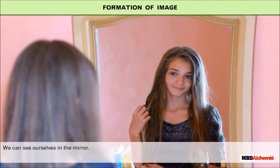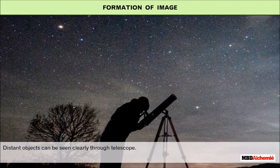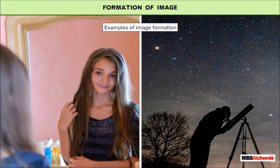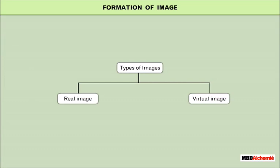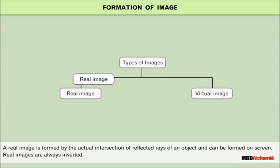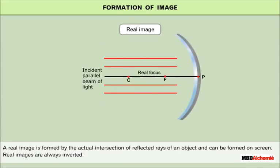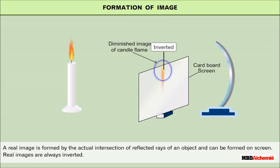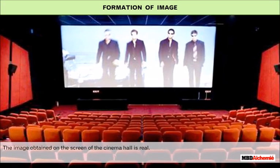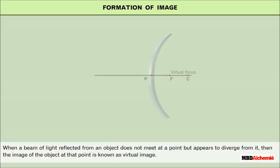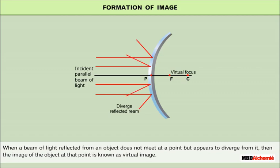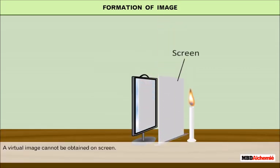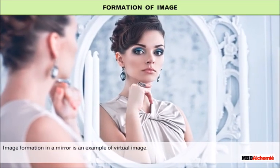Formation of Image. We can see ourselves in the mirror. Distant objects can be seen clearly through a telescope. All these are examples of image formation. Images are of two types: real image and virtual image. A real image is formed by the actual intersection of reflected rays of an object and can be formed on a screen. Real images are always inverted. The image obtained on the screen of a cinema hall is real. When a beam of light reflected from an object does not meet at a point but appears to diverge from it, then the image of the object at that point is known as a virtual image. A virtual image cannot be obtained on a screen. Image formation in a mirror is an example of a virtual image.